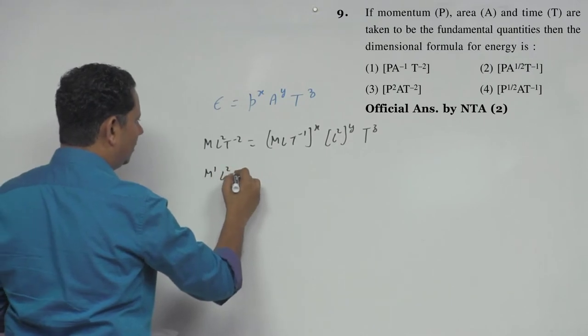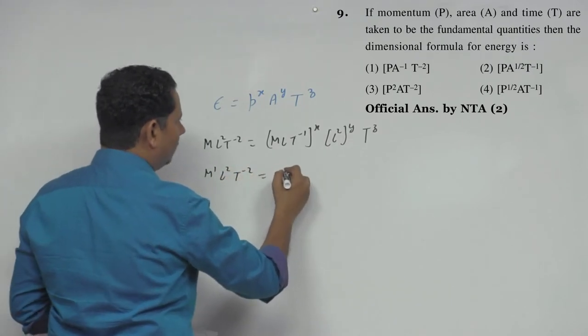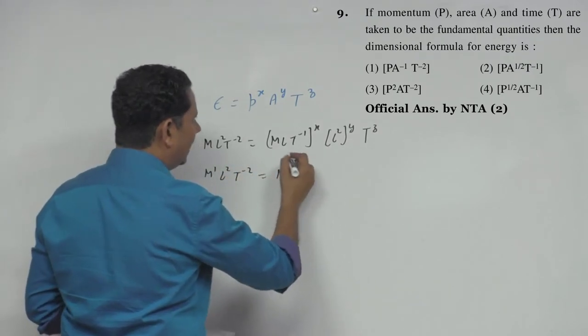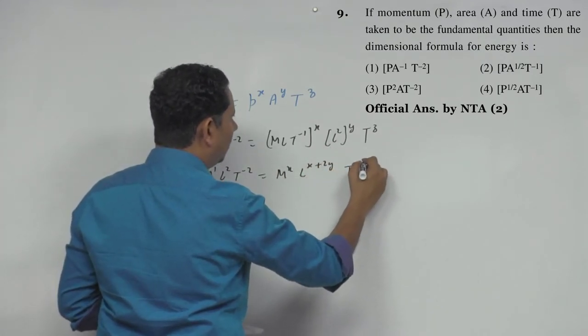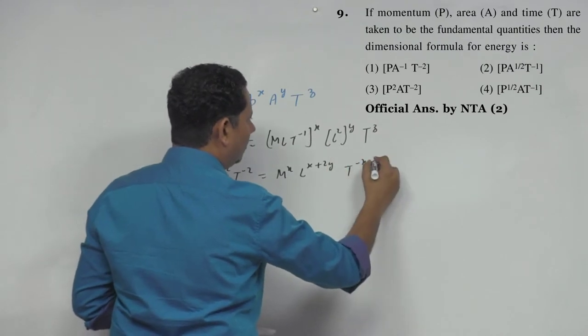So M to the power 1, L to the power 2, T to the power minus 2 will be equal to M to the power X, L to the power X plus 2Y, and T to the power minus X plus Z.